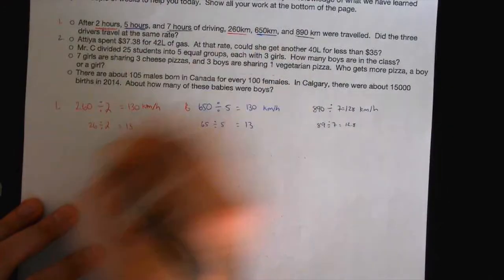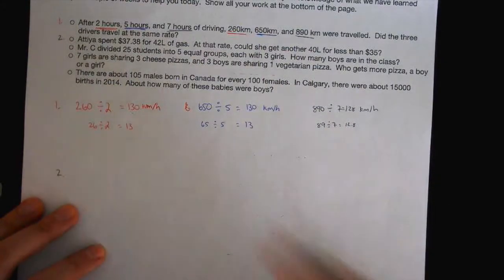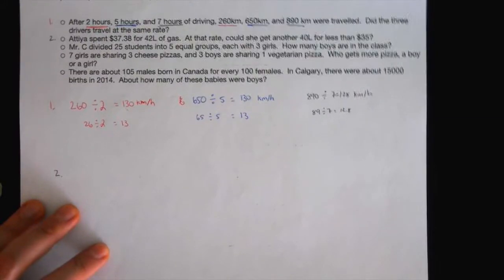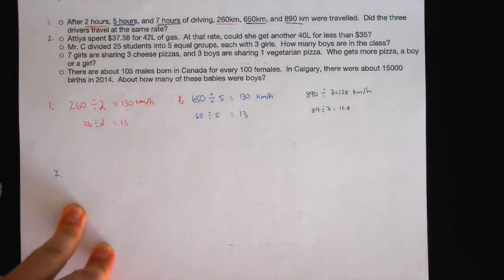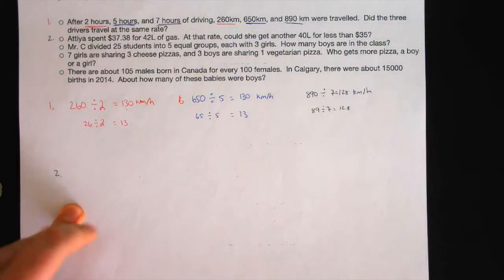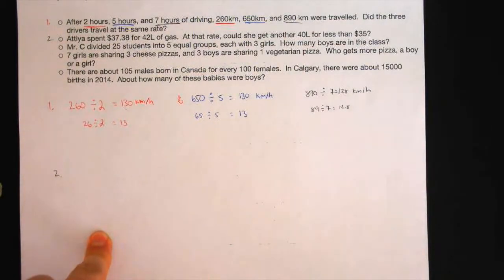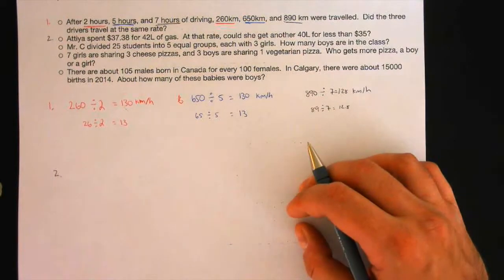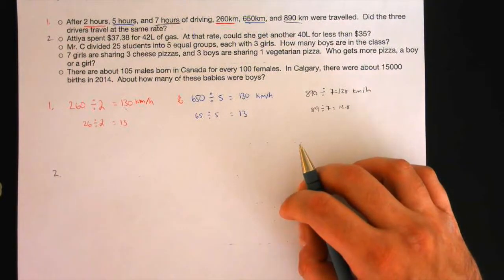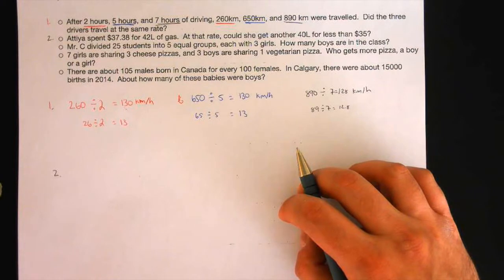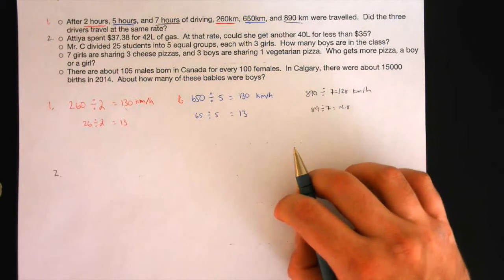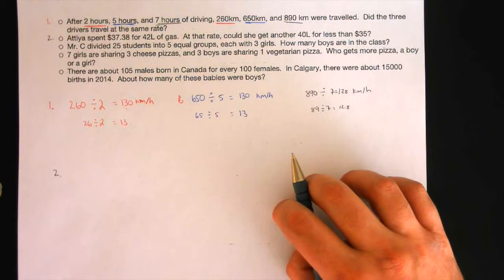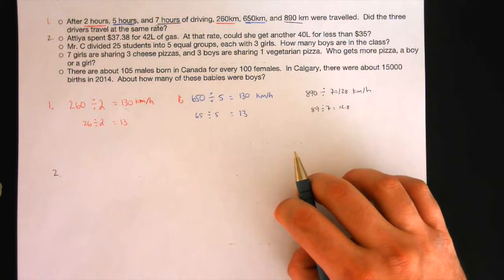Let's look at question number 2. Atiyah spent $37.38 for 42 liters of gas. At that rate, could she get another 40 liters of gas for less than $35? There's a clue in the question about what it wants you to do. What math concept does this want you to do? You're supposed to find how much money it costs. And that is called what? What's the magical math word when you're trying to find out what 1 is? It's rate.